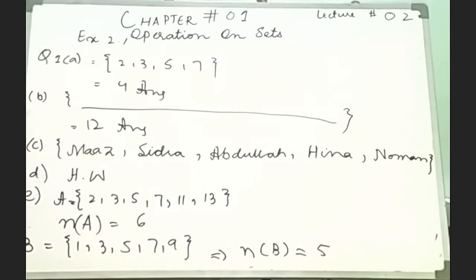This is the next question. Question number 2 asks you to define the following sets as finite and infinite. The finite set is where we know the elements, and the infinite set is where the elements continue without end. In part A, the set A, E, I, O, U is finite.